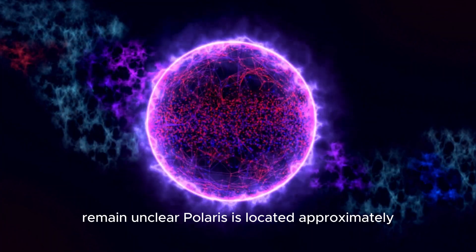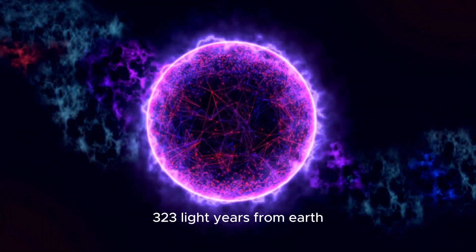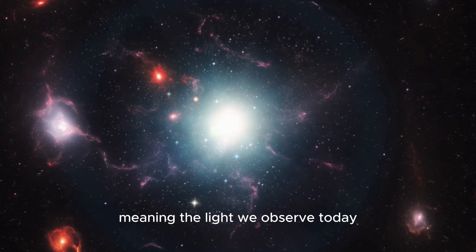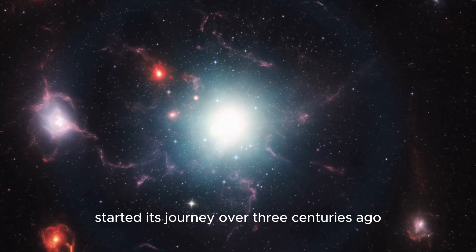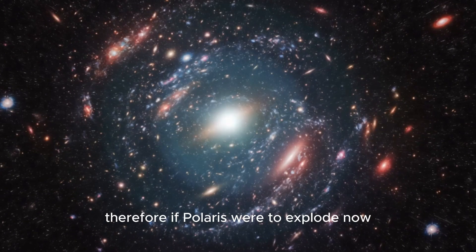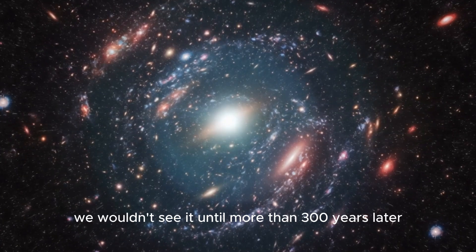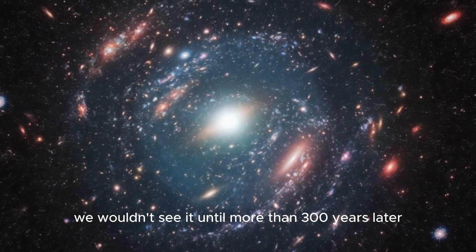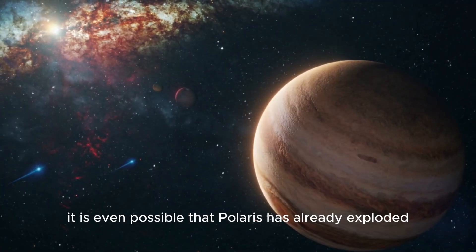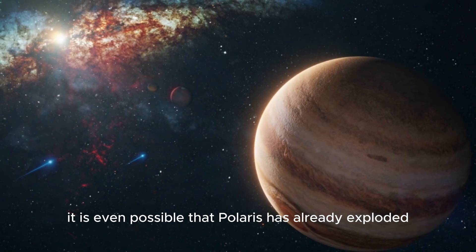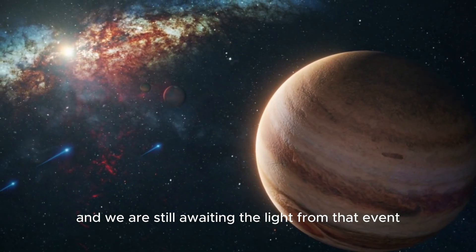Polaris is located approximately 323 light-years from Earth, meaning the light we observe today started its journey over three centuries ago. Therefore, if Polaris were to explode now, we wouldn't see it until more than 300 years later. It is even possible that Polaris has already exploded, and we are still awaiting the light from that event.